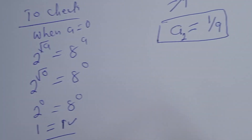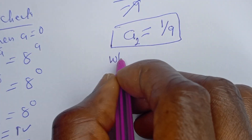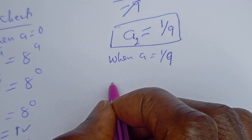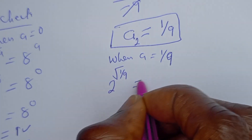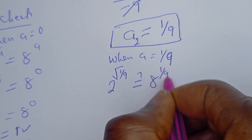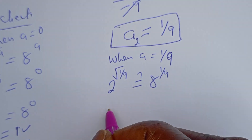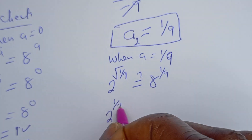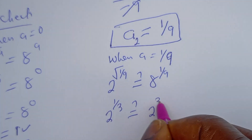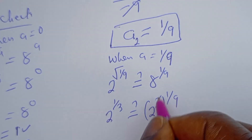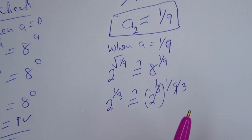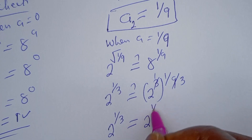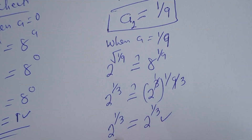Also, when a is equal to 1 over 9, we have 2 to the power of square root of 1 over 9 must equal 8 to the power of 1 over 9. This gives 2 to the power of 1 over 3, which must equal — since 8 equals 2 cubed — 2 cubed to the power of 1 over 9, which is 2 to the power of 3 times 1 over 9, equals 2 to the power of 1 over 3. This is true. I hope you enjoyed the video.